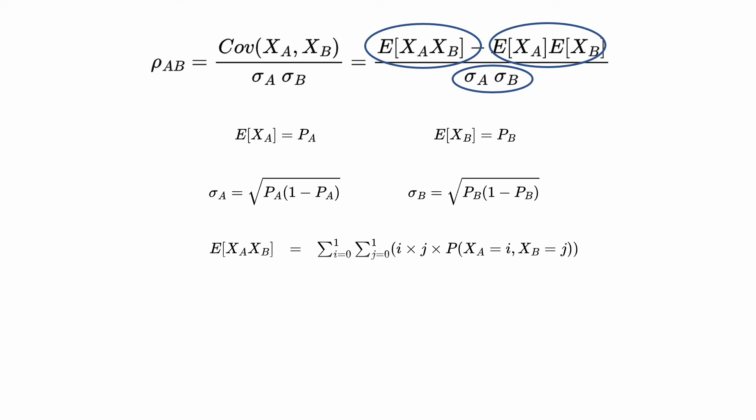The weight is the probability of each outcome: when both default, both survive, A defaults and B survives, and A survives and B defaults.